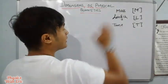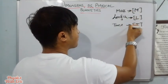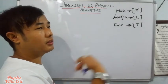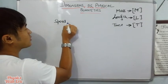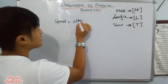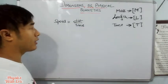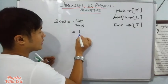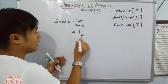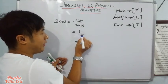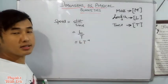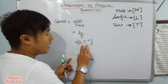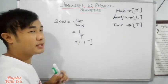Let me derive an example. For speed, the formula is distance divided by time. Distance is a length, so we write L, divided by time T. That gives us L times T to the power of minus one — LT⁻¹. So this is the dimensional formula of speed.